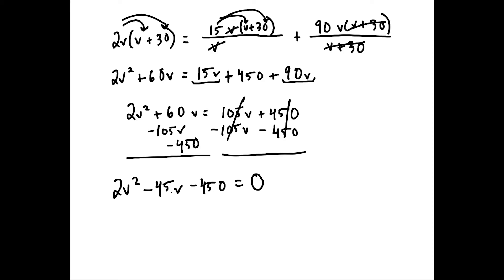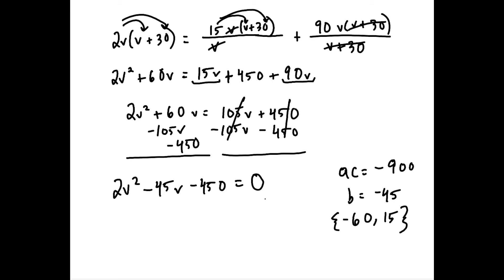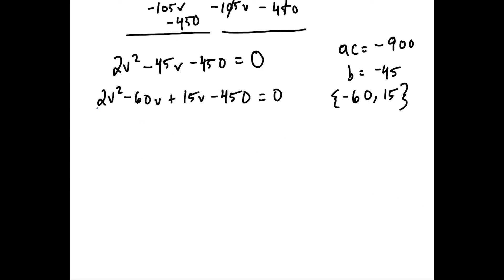You could use technology for this, but using the AC method: the product of the first coefficient and constant is 2 times negative 450, which is negative 900, and the middle term B is negative 45. Two numbers with a product of negative 900 and a sum of negative 45 are negative 60 and positive 15. We break the middle term into minus 60V plus 15V, giving 2V squared minus 60V plus 15V minus 450 equals zero.